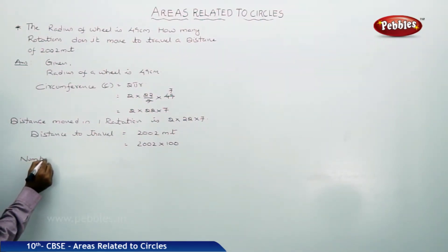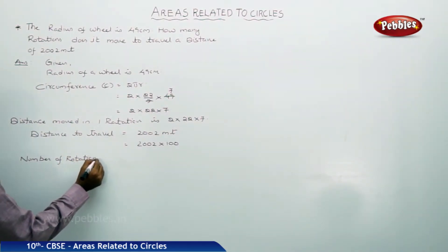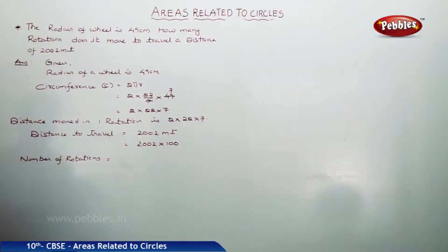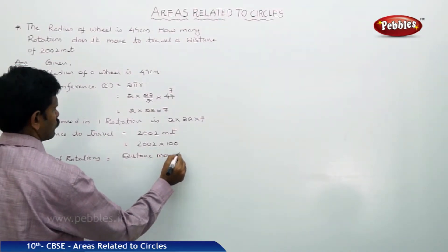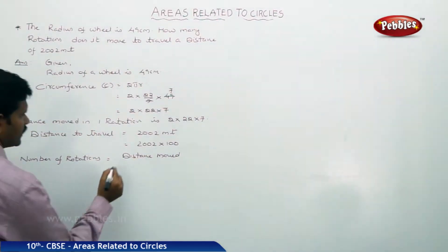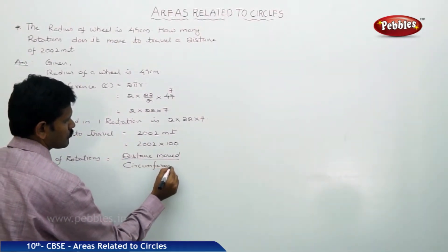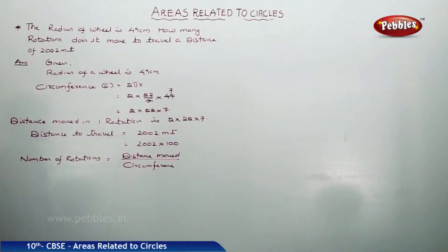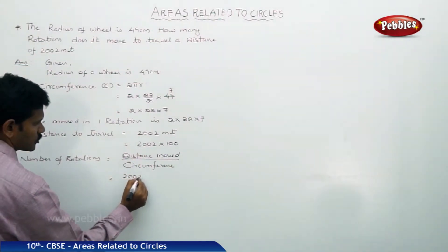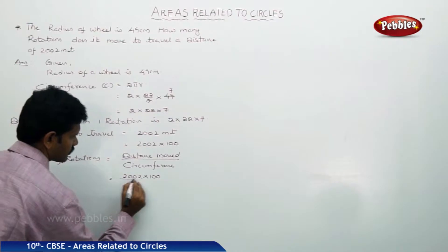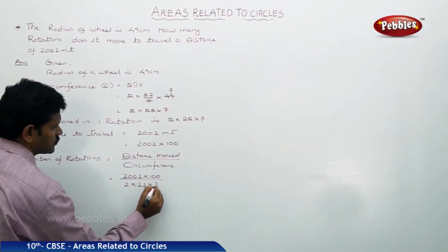Number of rotations is equal to distance moved divided by circumference. That is, distance moved is 2002 into 100, divided by circumference, which is 2 into 22 into 7.